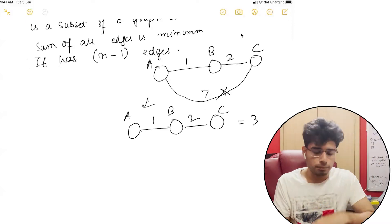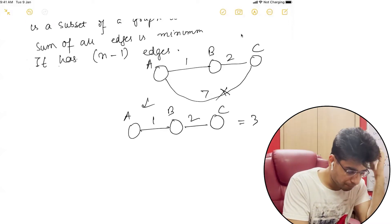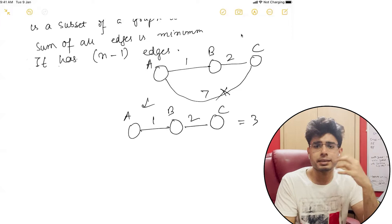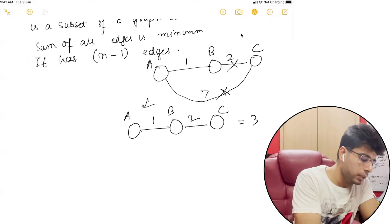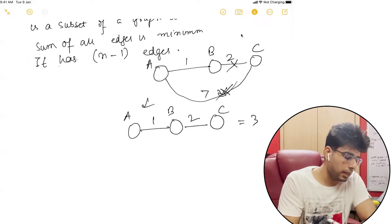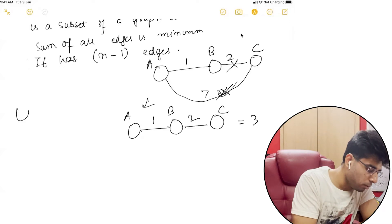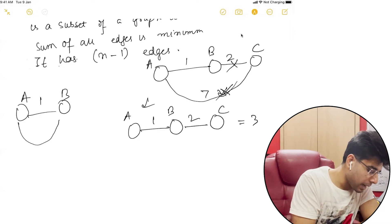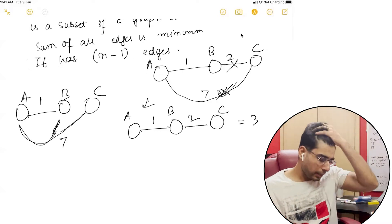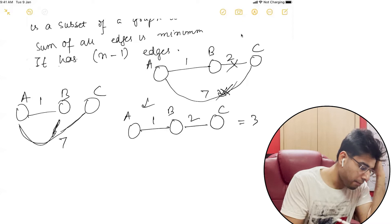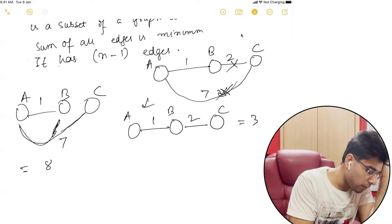What if instead we had removed the edge with cost 2 and taken the 7? Then the graph would look like A-B with cost 1, and A-C with cost 7. In that case, our cost would come out to be 8.